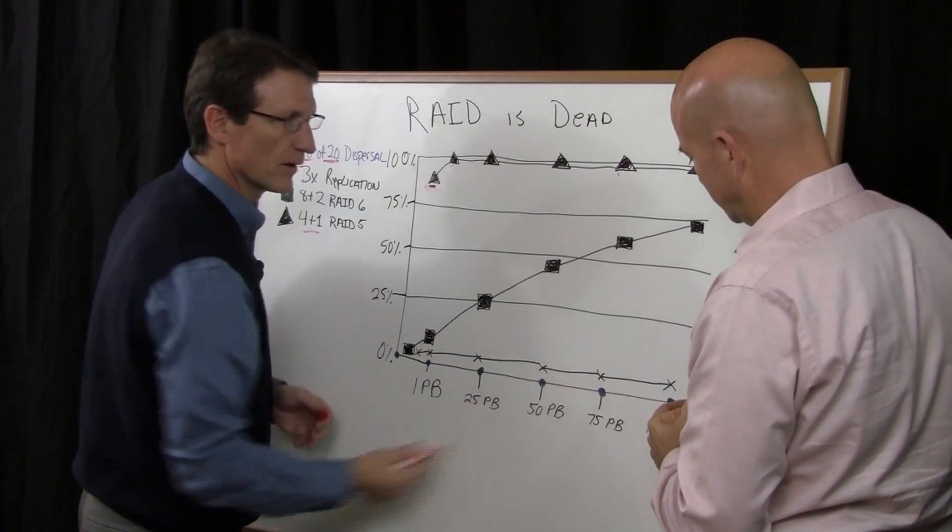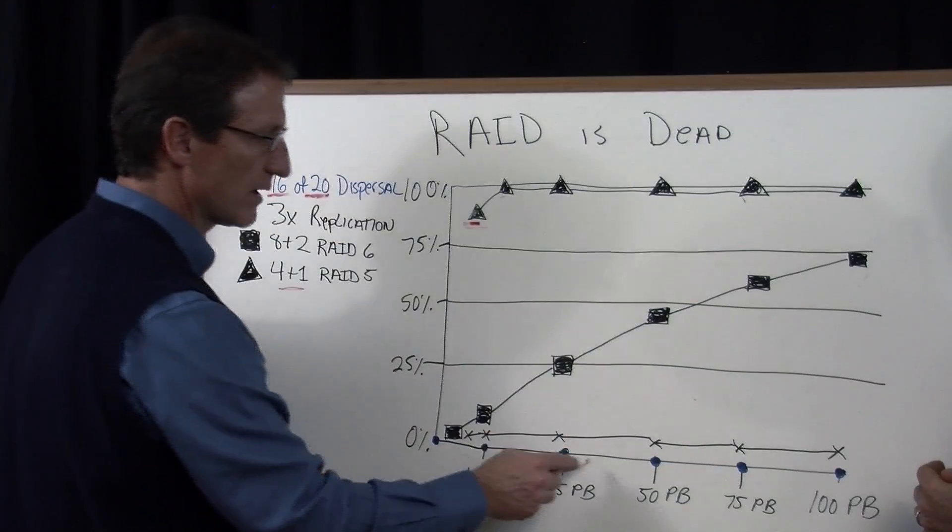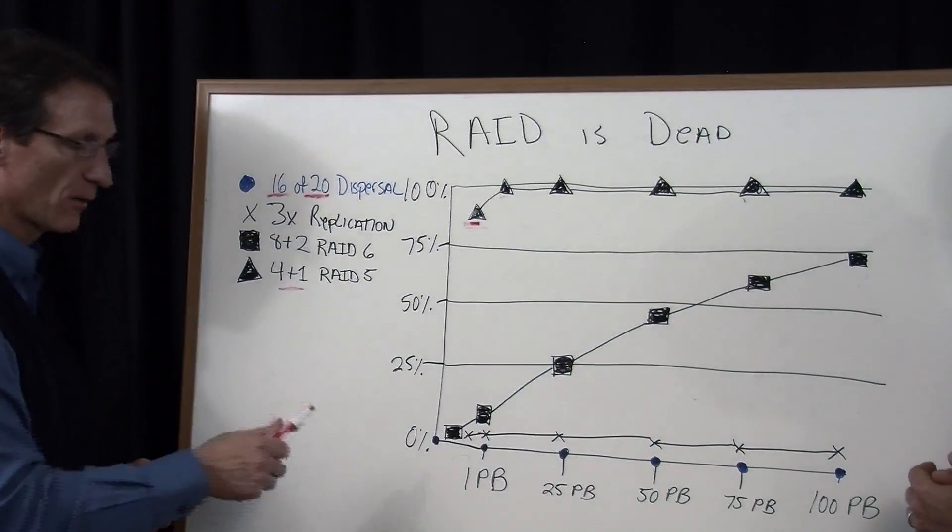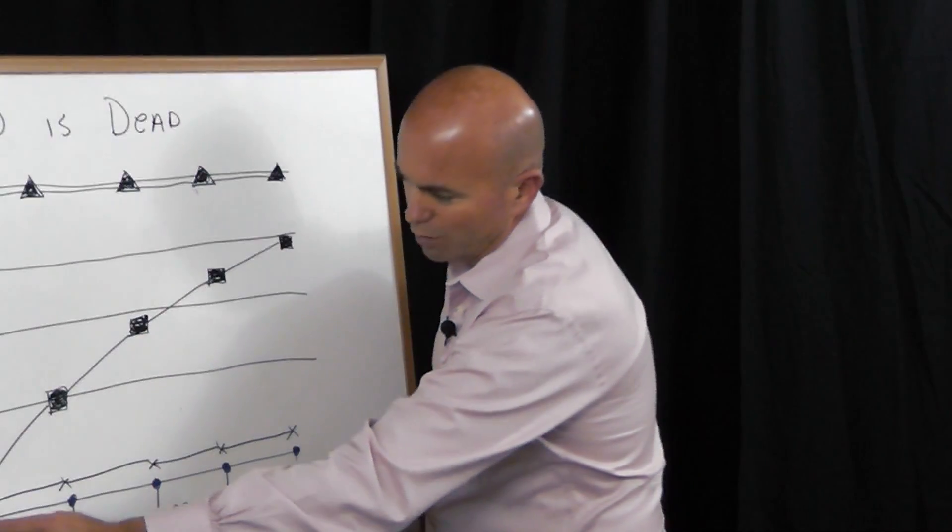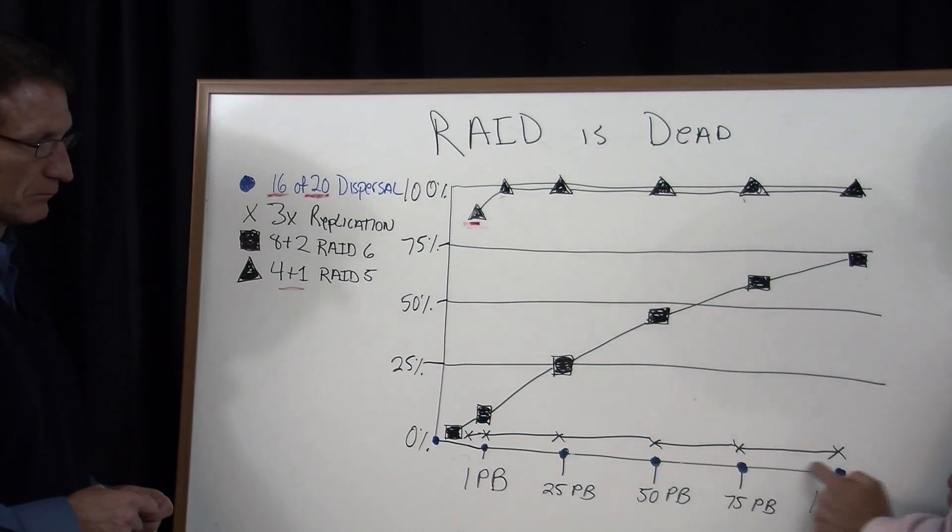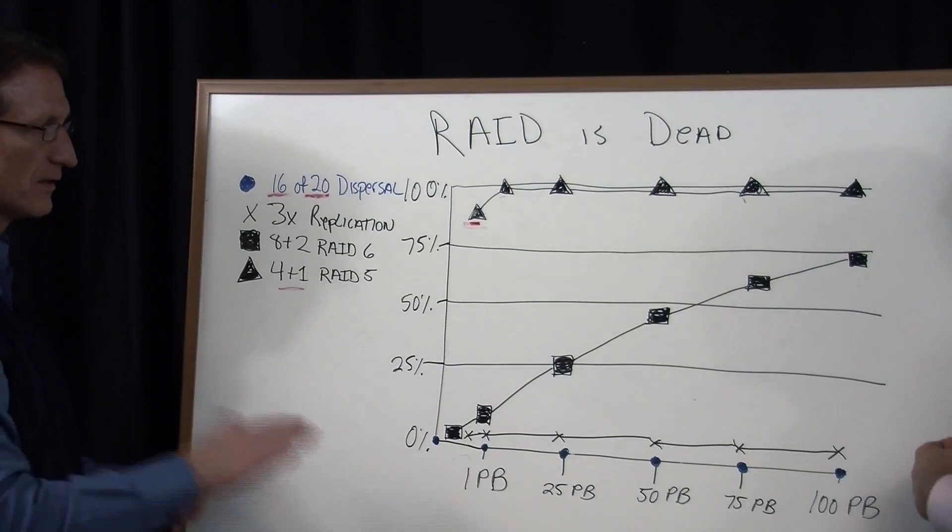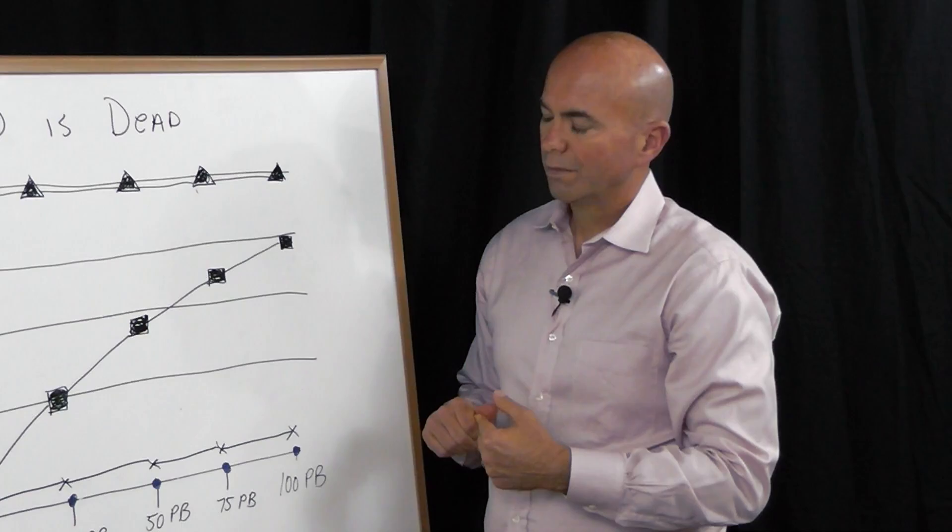But look at the levels of reliability that you're getting compared to other approaches. So if your data is important, and especially if you're getting to this size and this capacity, you're going to want to look at a different way to store information. So I just want to clarify, these dots here represent the dispersal model, right? Correct. And it's right on the zero. So the likelihood of failure is zero, even at 100 petabytes, with this configuration of dispersal.